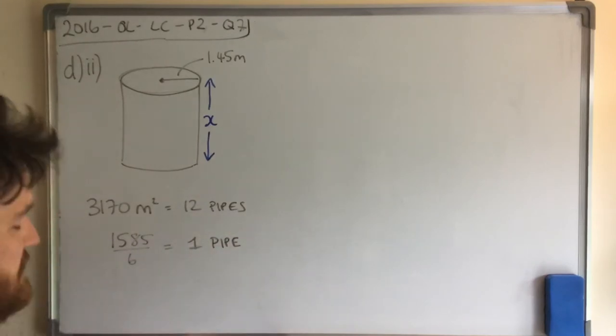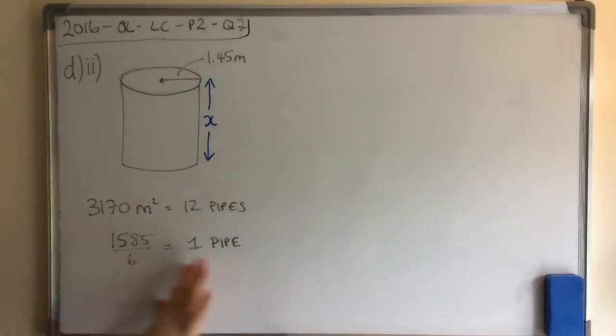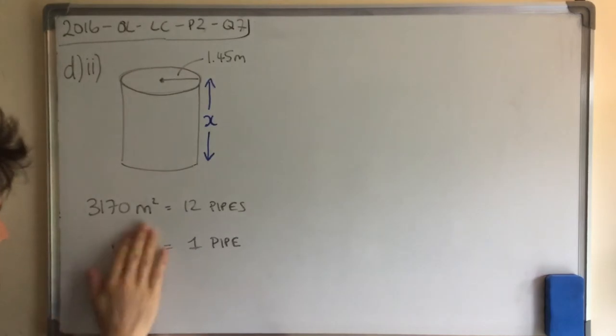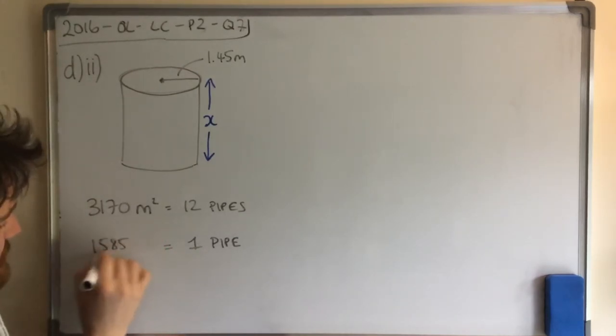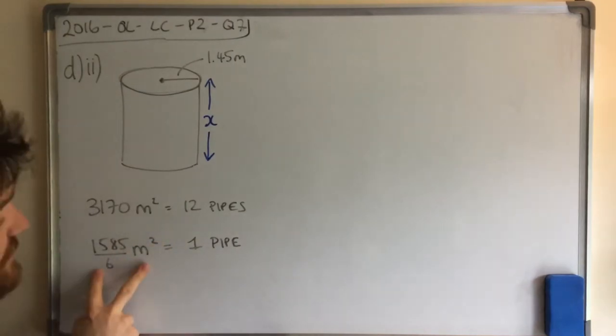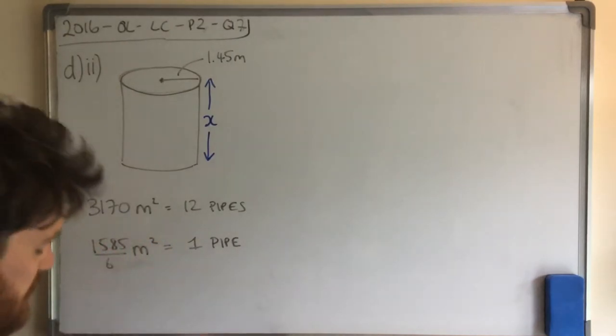Now you might be saying, oh no, it's a fraction. Look, don't worry about that. That's okay. 1585 divided by 6 is going to write it over here. It doesn't matter that it's a fraction. A fraction is a number, you know. But what we've got is we've got the area for one pipe.